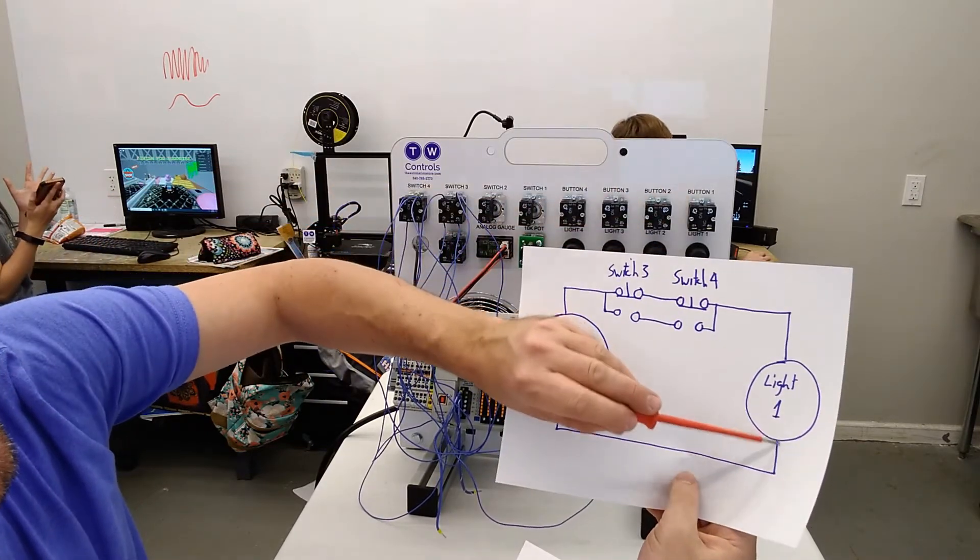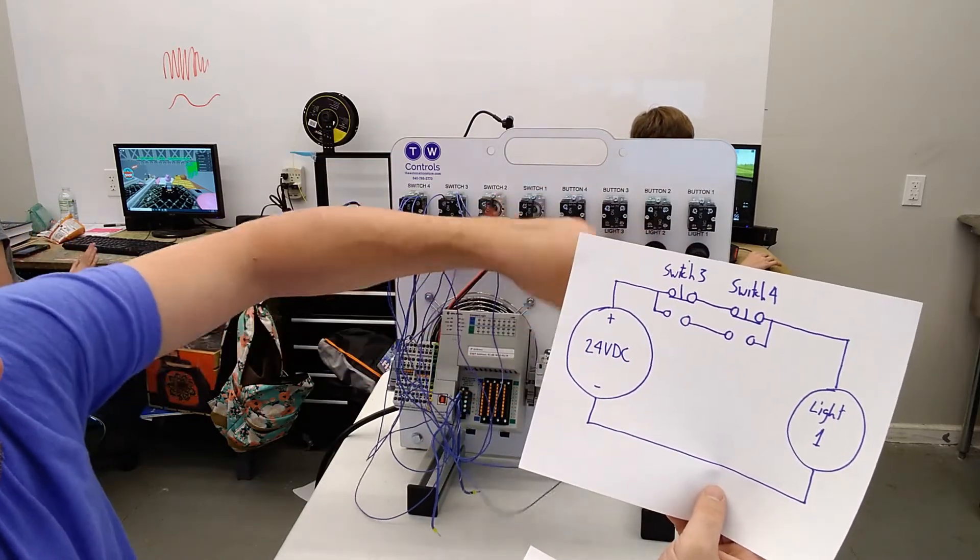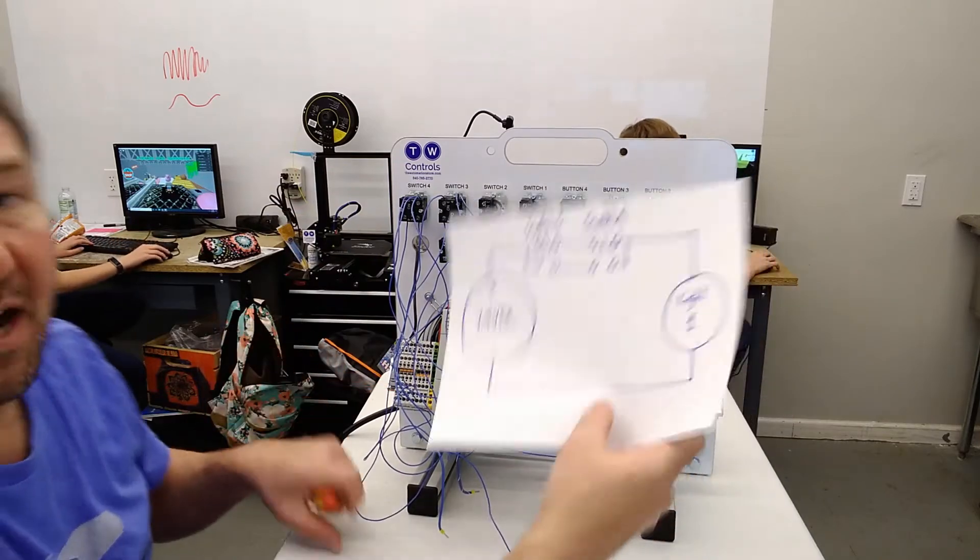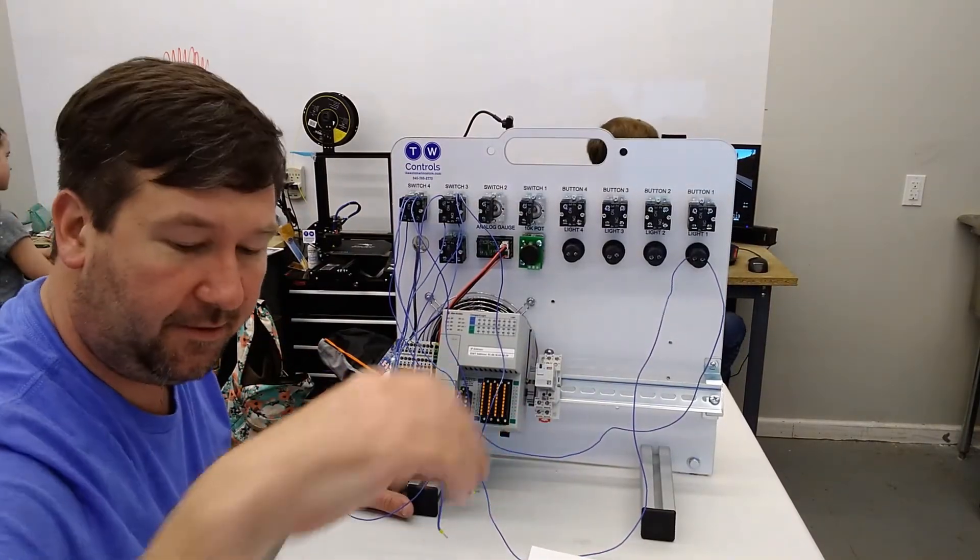And then finally we have this minus wire. So we have a wire going here, coming to the minus of our power supply, completing our circuit. Let's flip our trainer around and see what it does.